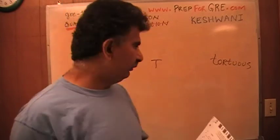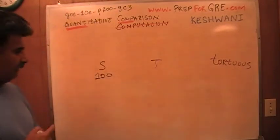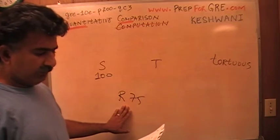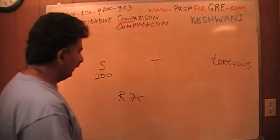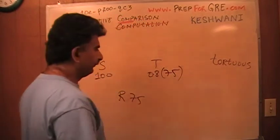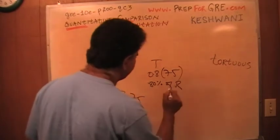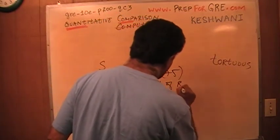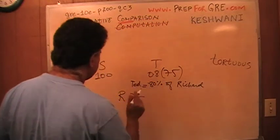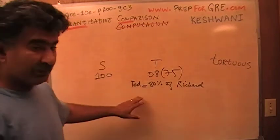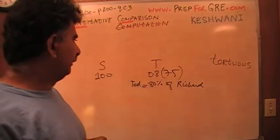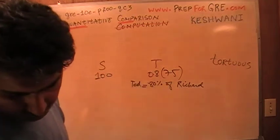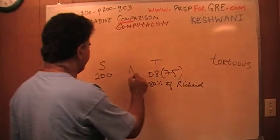I'm going to plug in a number for Sandra's salary — I'm going to pretend Sandra's salary is 100. If Sandra is 100, then Richard is 75, because Richard's salary is 75% of Sandra's. Then it goes on to say that Tad's salary is 80% of Richard's salary. So which quantity is bigger? It's very simple. 80% of 75 is obviously going to be less than 100. That's all it is. The answer is A.